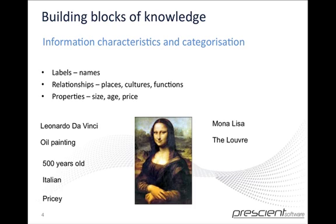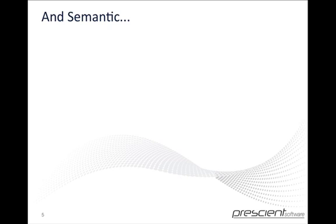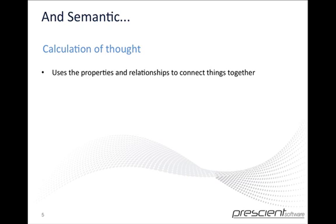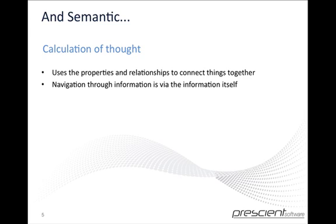So how does this work with computers and calculating things? It works through the calculation of thought. What a semantic program will do is utilize the properties and relationships of items in order to connect things together automatically. This then gives us navigation through the information itself.